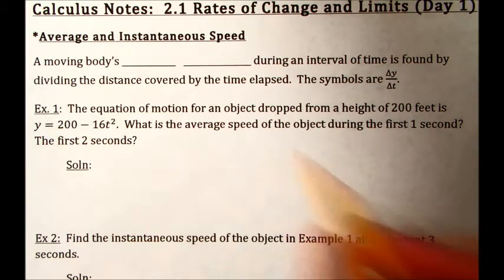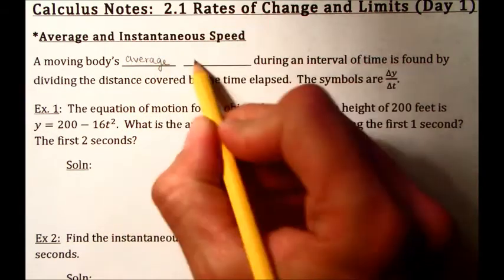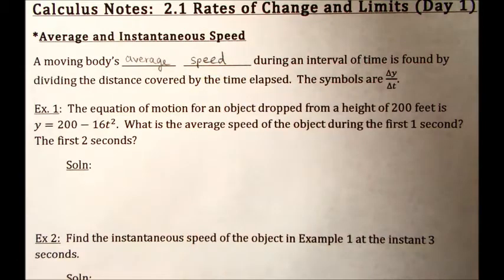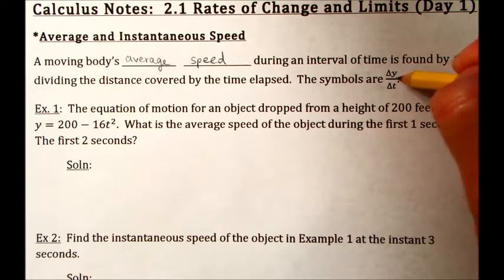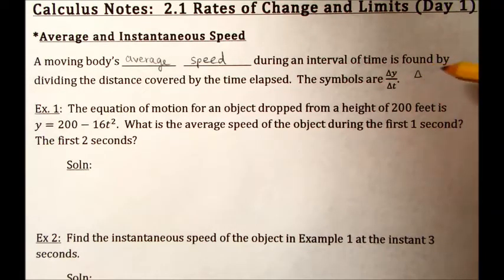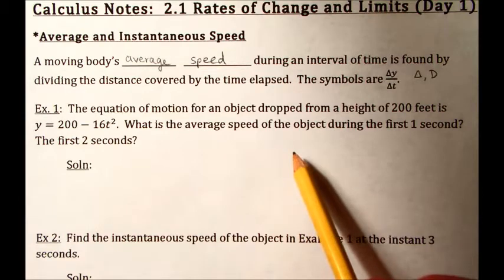Moving bodies. Average speed during an interval of time is found by dividing the distance covered by the time elapsed. The symbols here are Δy over Δt. Delta is the Greek letter for d, this is a capital delta, and it literally stands for difference. So you're dealing with a difference in two y values and a difference in two times. It's a ratio there. If you wanted to start off with this first example, you could find the average speed of an object moving during a single second, for example.